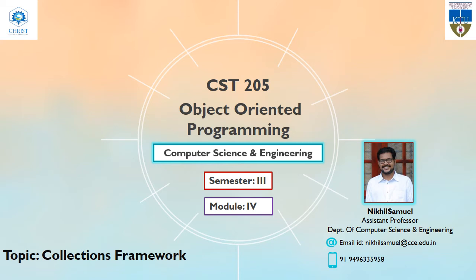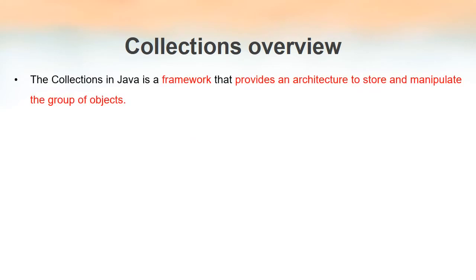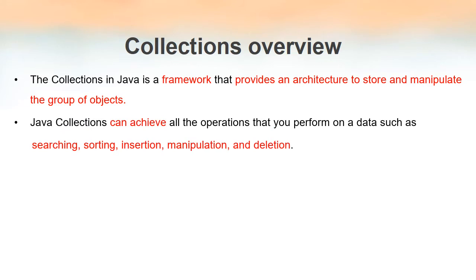Welcome to the video lecture series on object-oriented programming. In this video lecture we will be discussing the collections framework. Collections in Java is actually a framework that provides an architecture to store and manipulate a group of objects. Using Java collections we can achieve all kinds of operations like searching, sorting, storing, insertion, manipulation, etc., that we perform on data structures. Java collection means a single unit of objects.